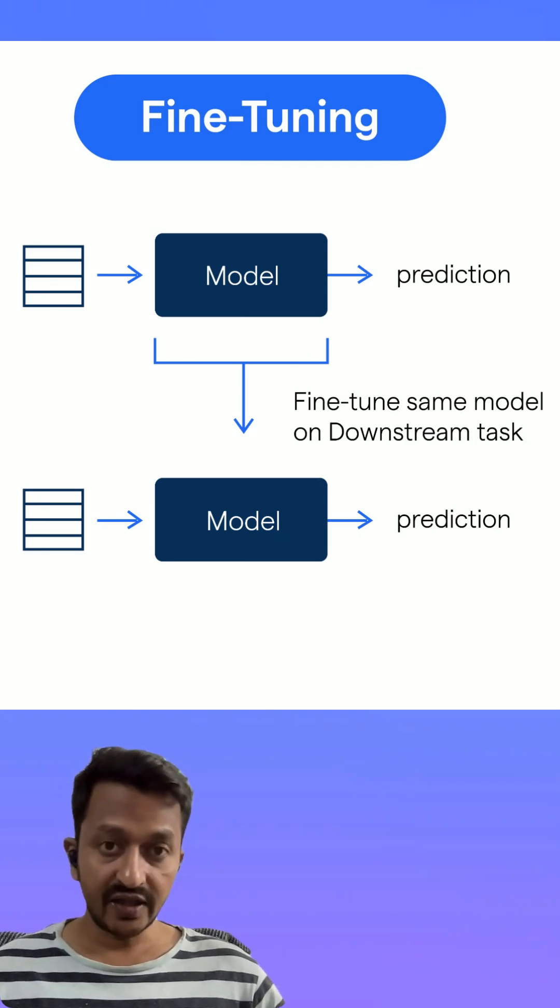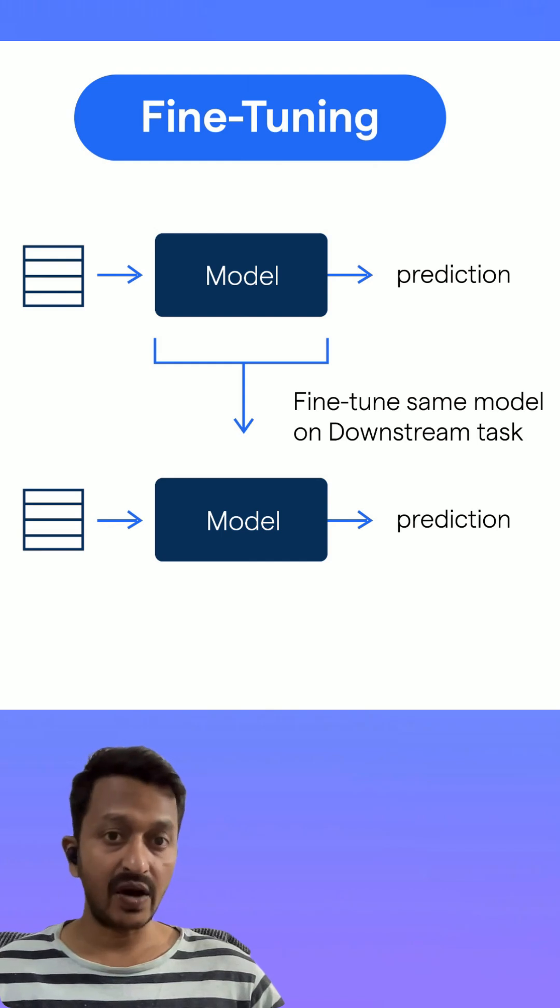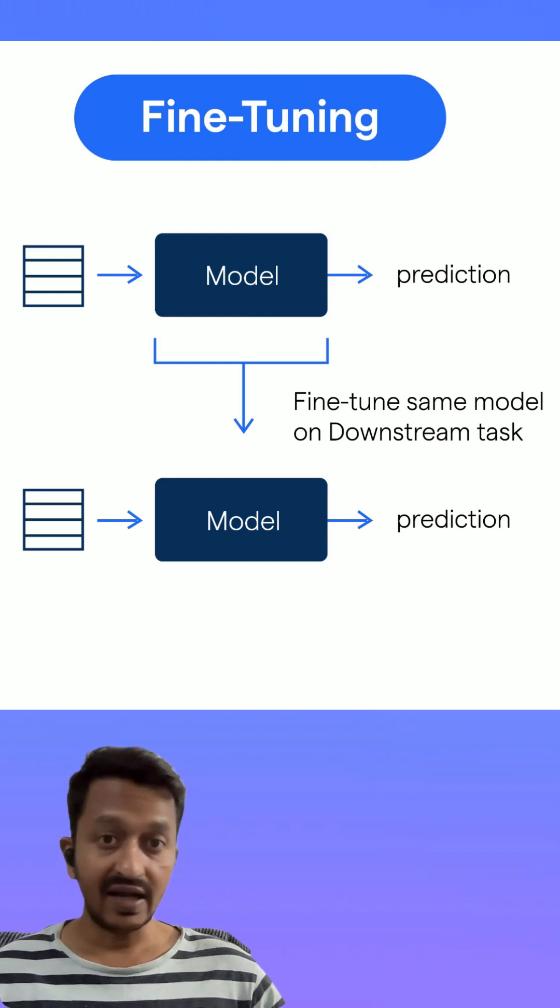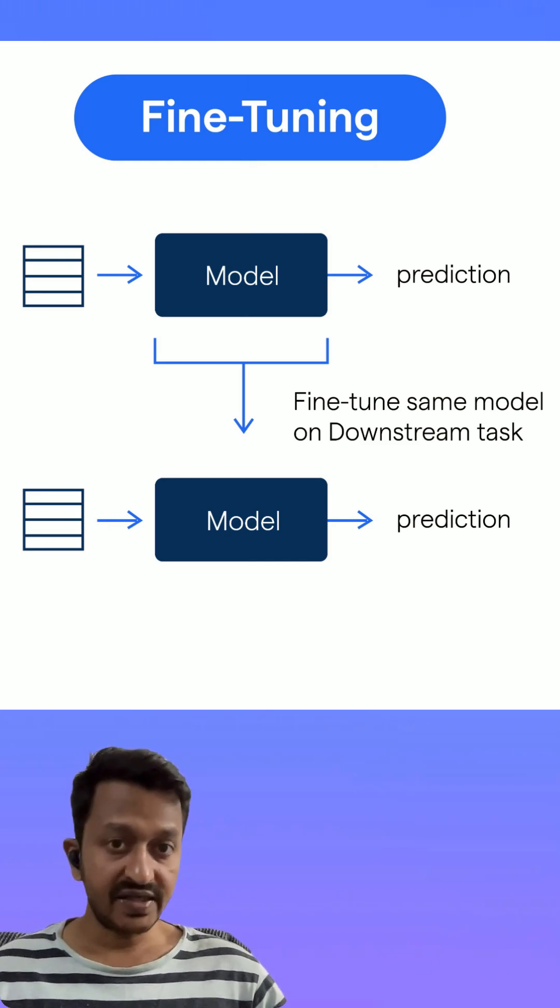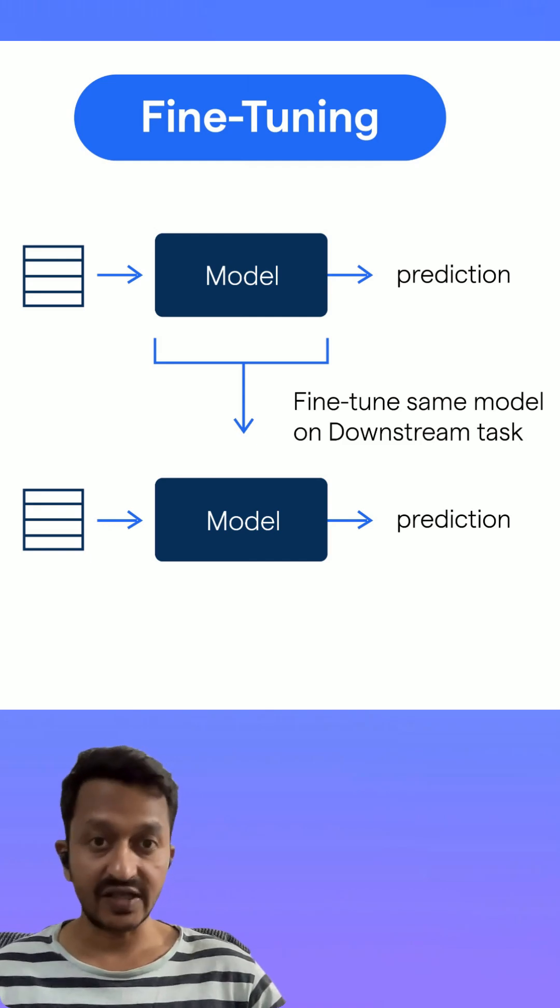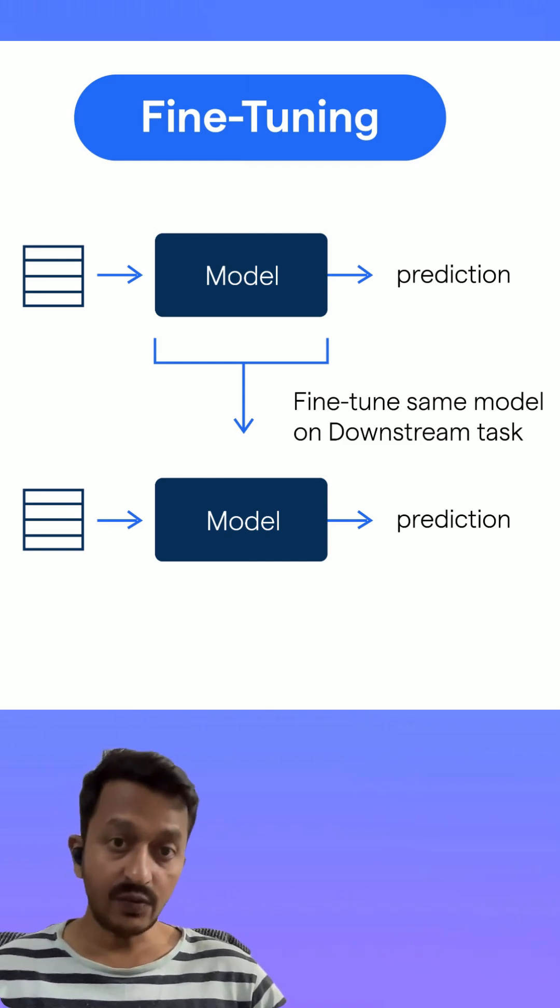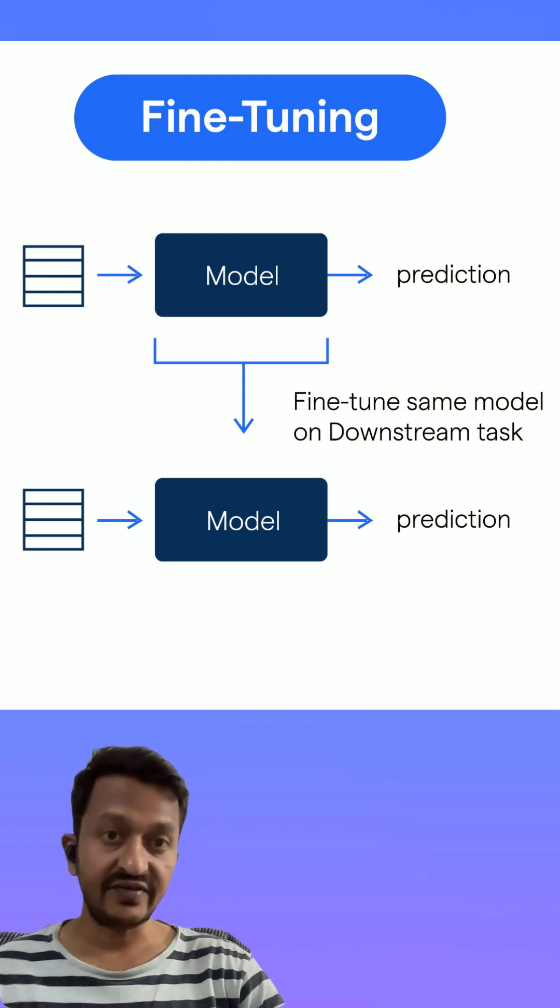So why does this matter? Without fine tuning, asking an LLM about brain surgery would be like asking a general practitioner to perform neurosurgery. They might know the basics, but you want the specialist. Fine tuning makes LLMs more accurate, more relevant, and way more useful for specific tasks.